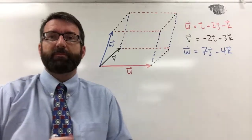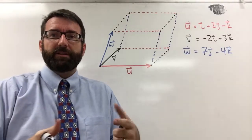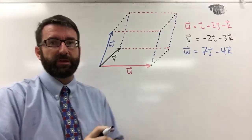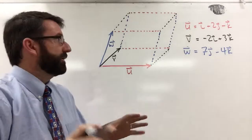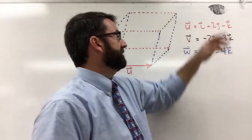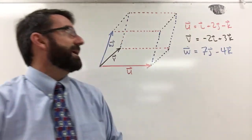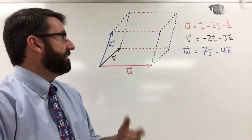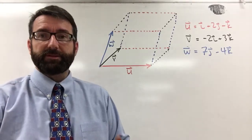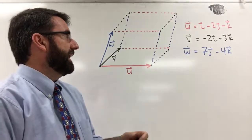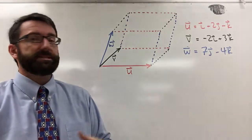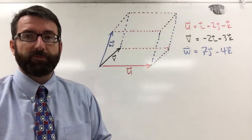For this example, we're asked to find the volume of the parallelepiped determined by these three vectors: u equals i plus 2j minus k, v equals negative 2i plus 3k, and w equals 7j minus 4k.